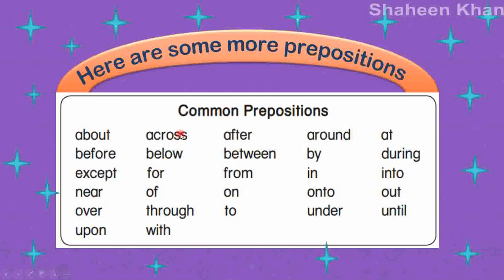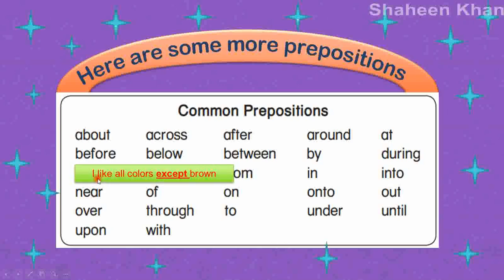Now let's see other common prepositions like 'about,' 'before,' and 'except.' How can we use 'except' in a sentence as a preposition to show some sort of relationship? For example: 'I like all colors except brown.' It means I like every other color except for brown. So I have a group of words 'I like all colors,' and then the noun 'brown,' connected by the word 'except,' which shows what relationship I have with those words and that noun — keeping brown out of the circle, meaning apart from all other colors, this is the one I don't like.